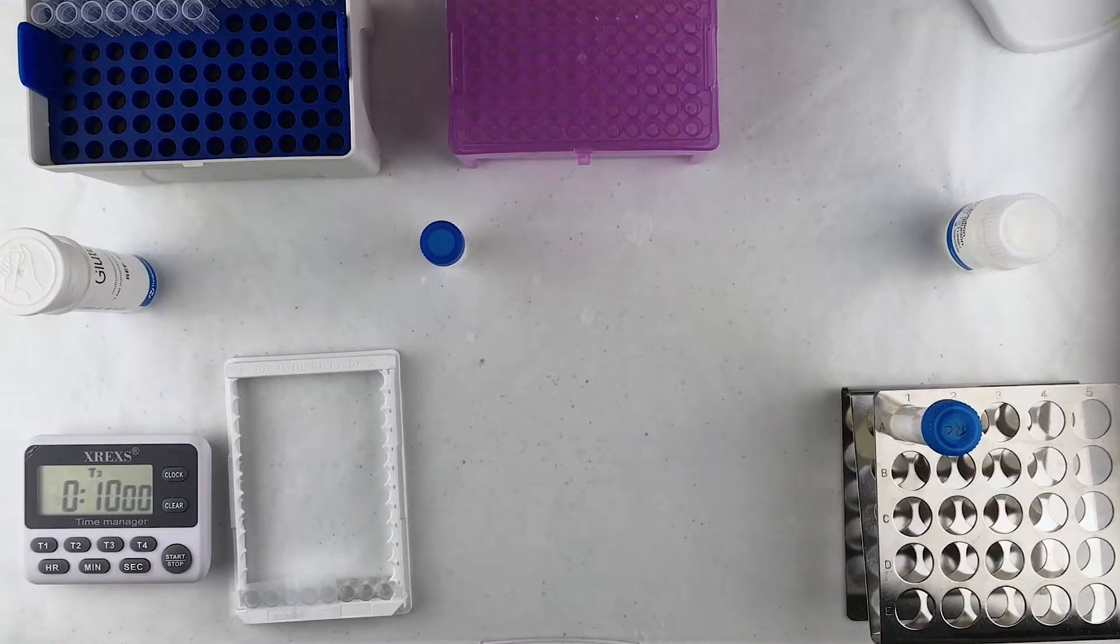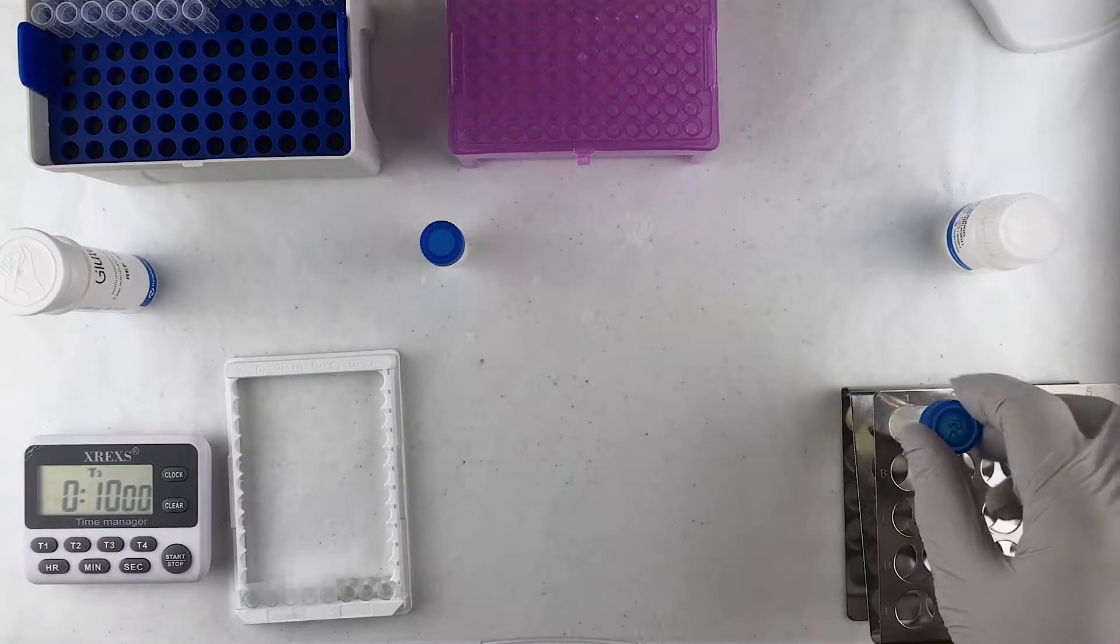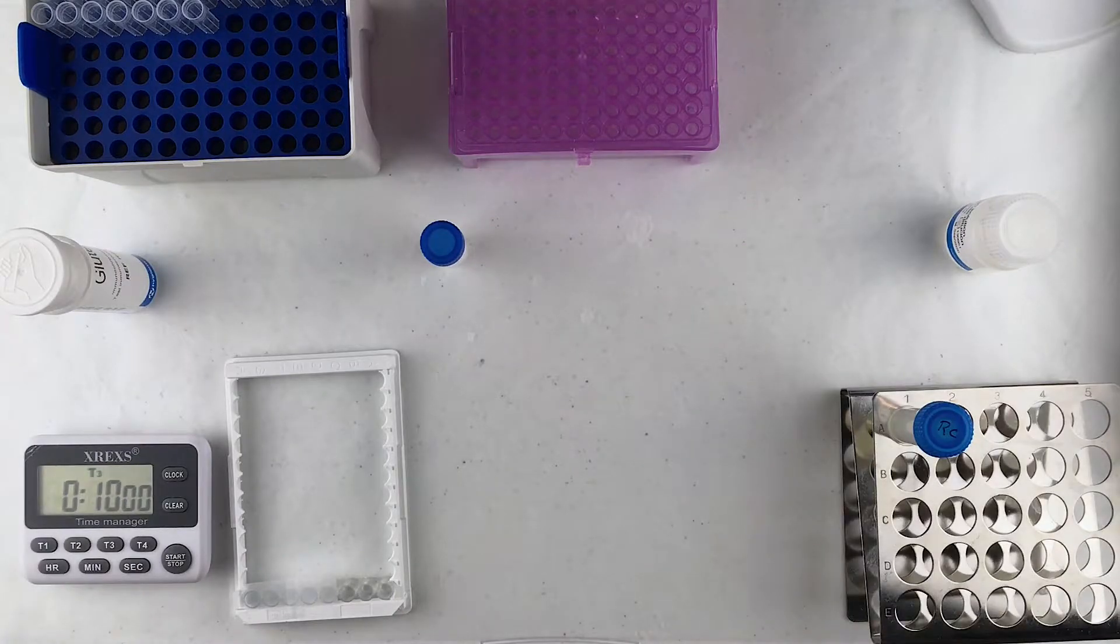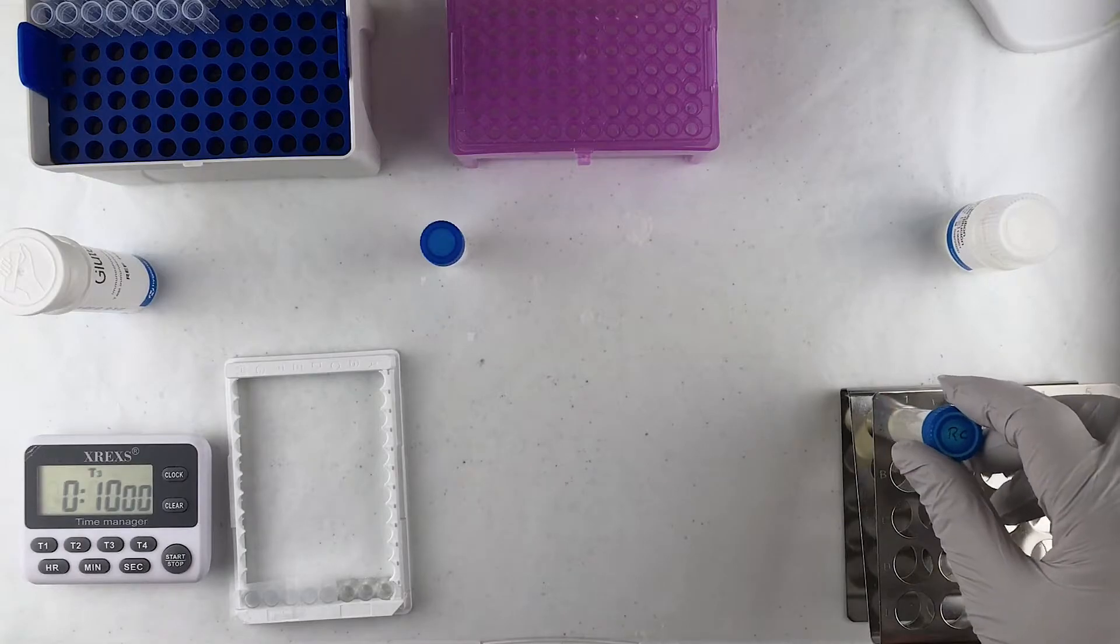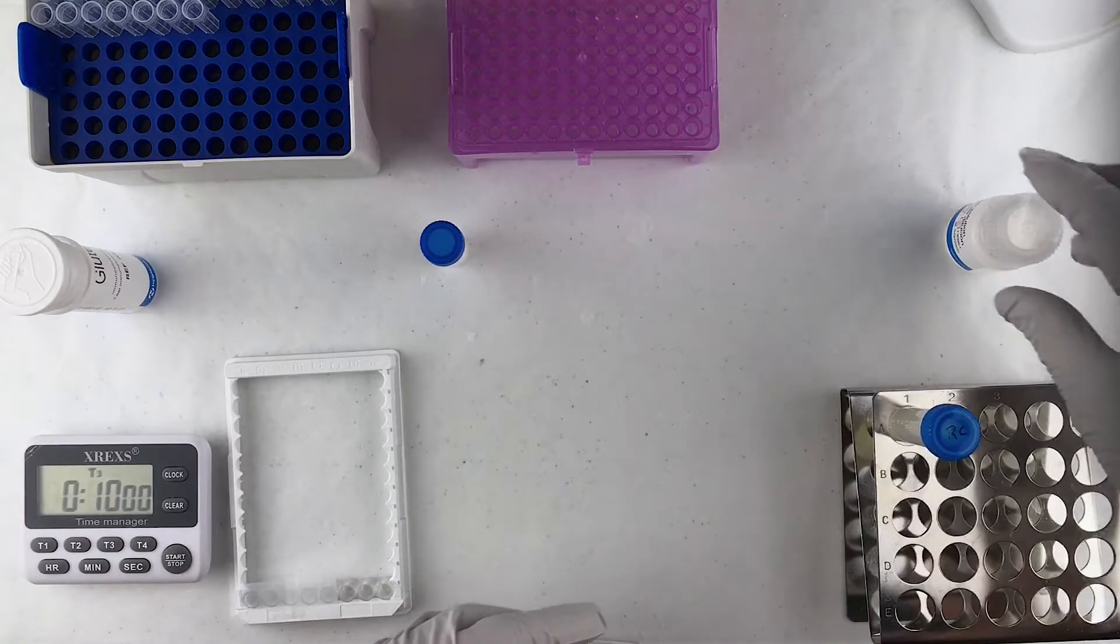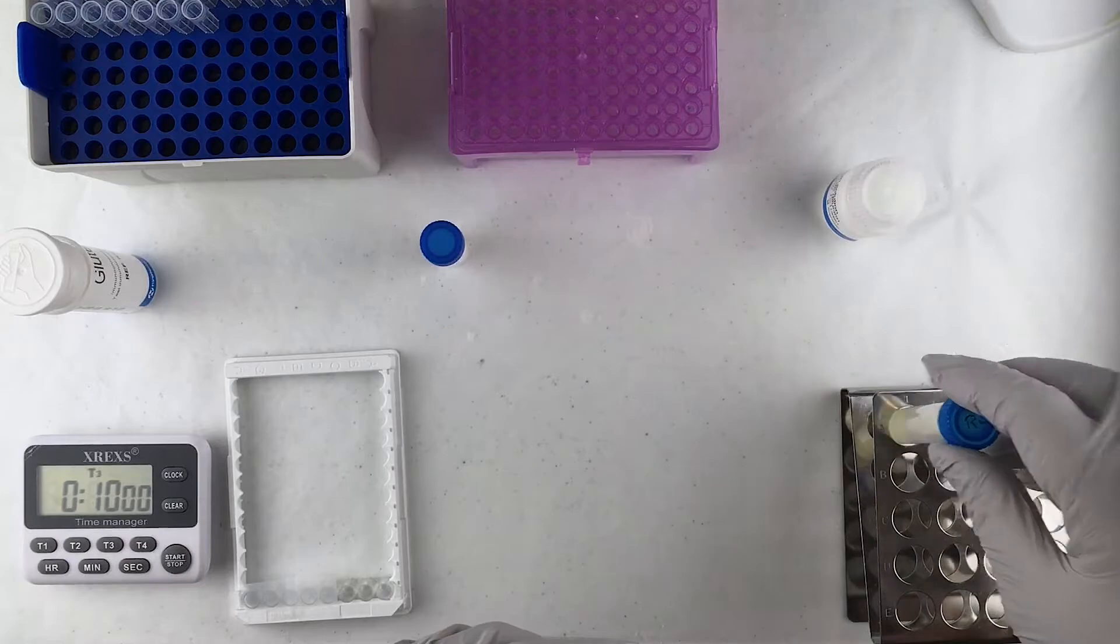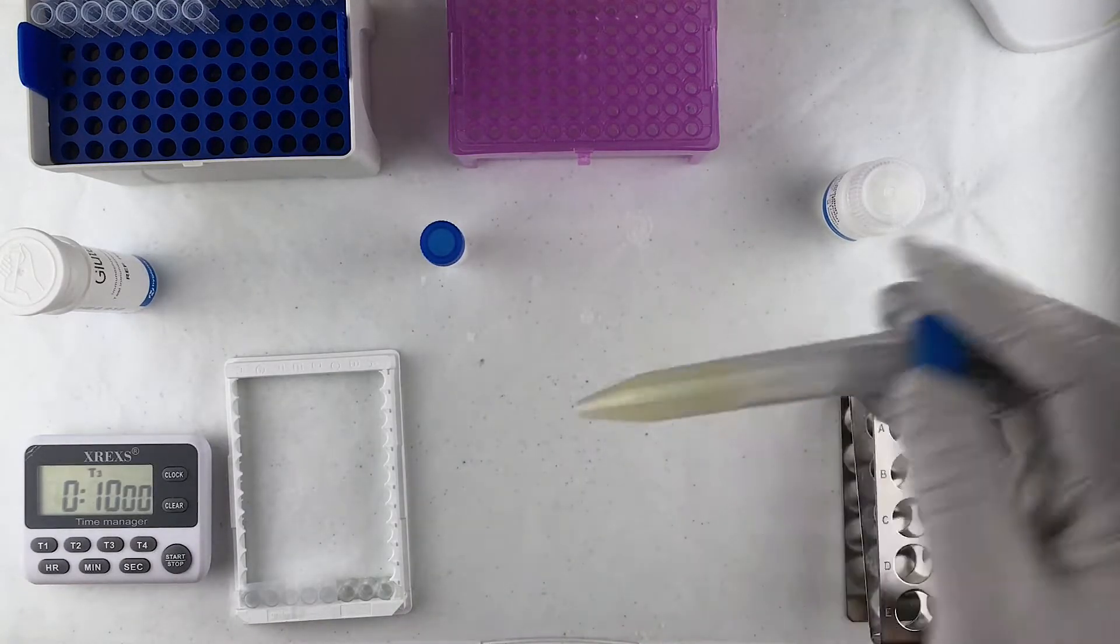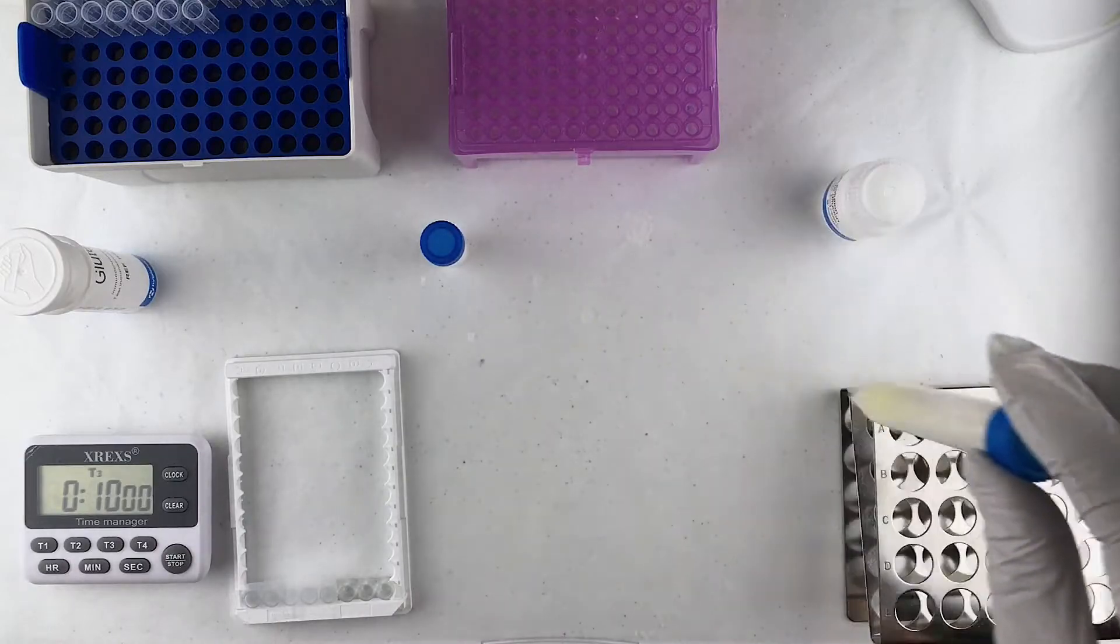Now we're ready to finish up the testing on General Mills Rice Chex. So this is the dilution phase and then we'll proceed to the analysis. So for the dilution, what we do is we mix some dilution solution, which we have here, with an appropriate amount of the extracted food sample, which we have here.